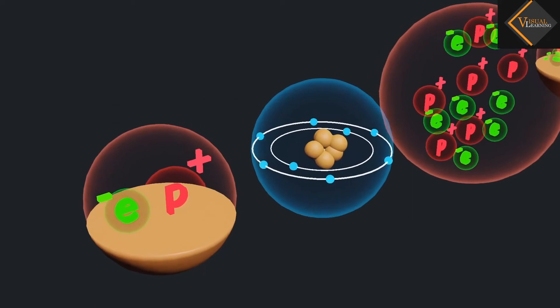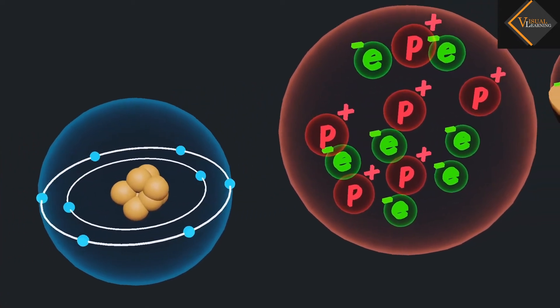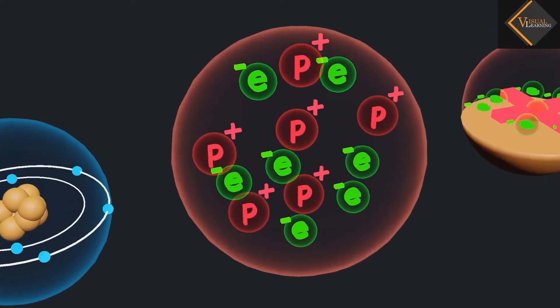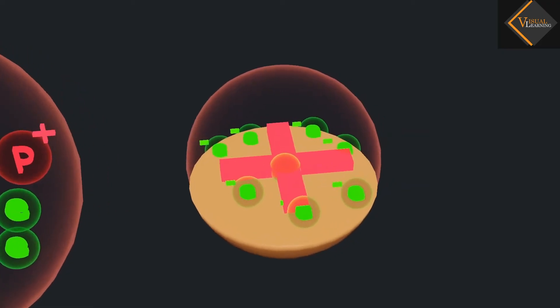It was then considered necessary to know how electrons and protons are arranged within an atom. For explaining this, many scientists proposed various atomic models.